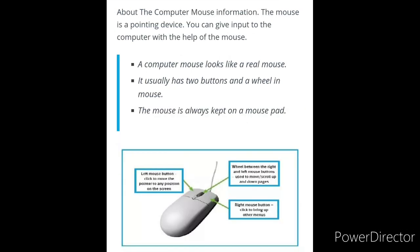We have to learn about the computer mouse. The mouse is a pointing device — it always points to some position on screen. We can give input to the computer with the help of a mouse. A computer mouse looks like a real mouse and it has two buttons and a wheel.